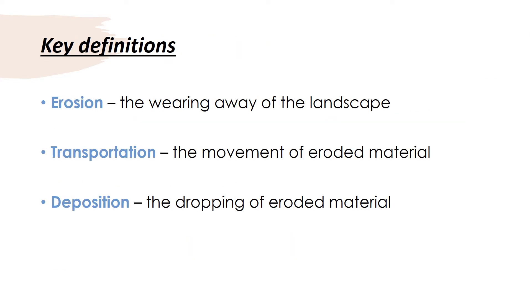Key definitions — please write these down. Erosion: the wearing away of the landscape. Transportation: the movement of eroded material. And deposition: the dropping of eroded material.